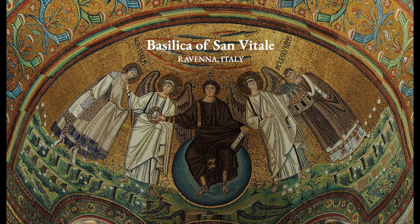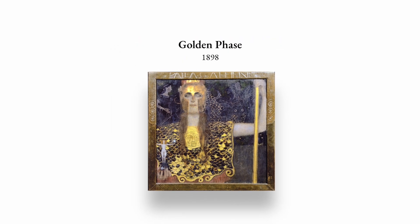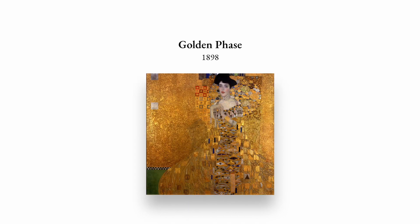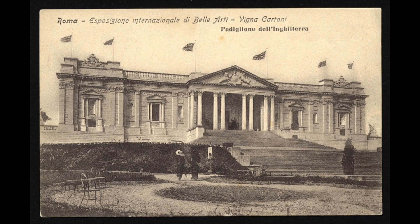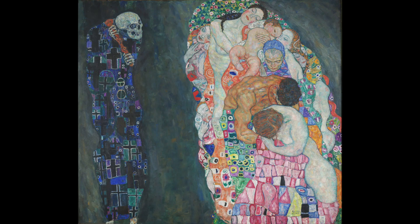Inspired by the mosaics of San Vitale when Klimt traveled to Ravenna in 1903, Death and Life was originally painted with a golden background — a signature we have come to associate with Klimt's most famous works and an inspiration that gave way to his golden period. At its first showing in the 1911 International Art Exhibition in Rome, the golden Death and Life won the coveted first prize. However, after its fifth exhibition, Klimt decidedly changed the background to grey, to more accurately depict the contrast between life and death.